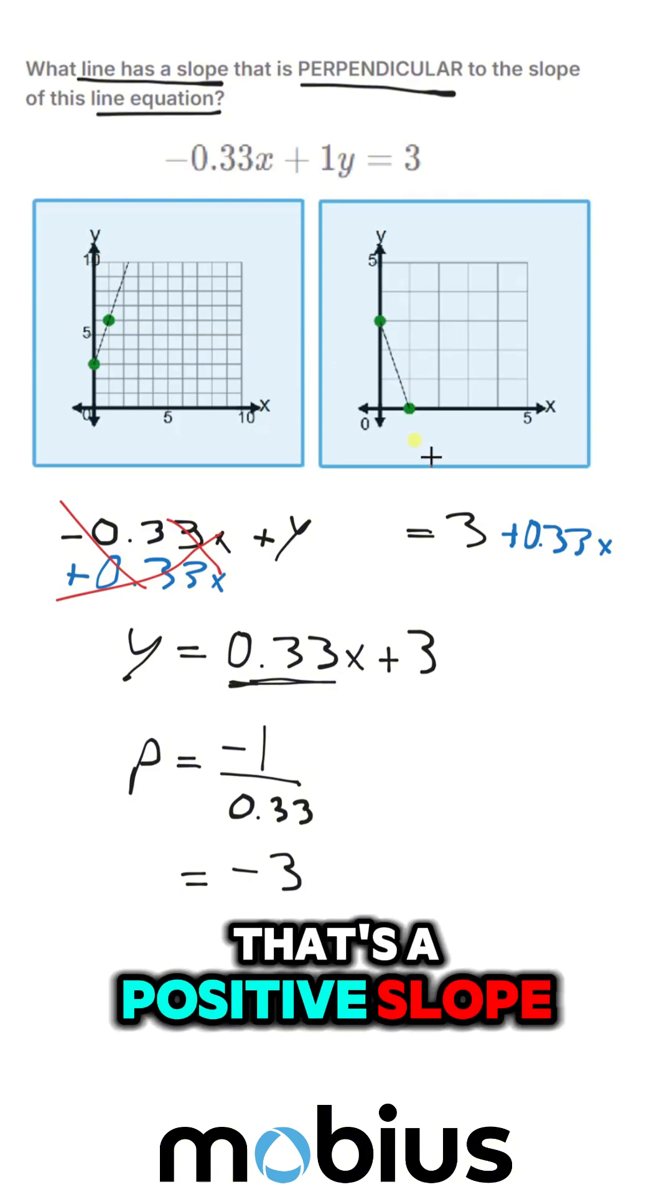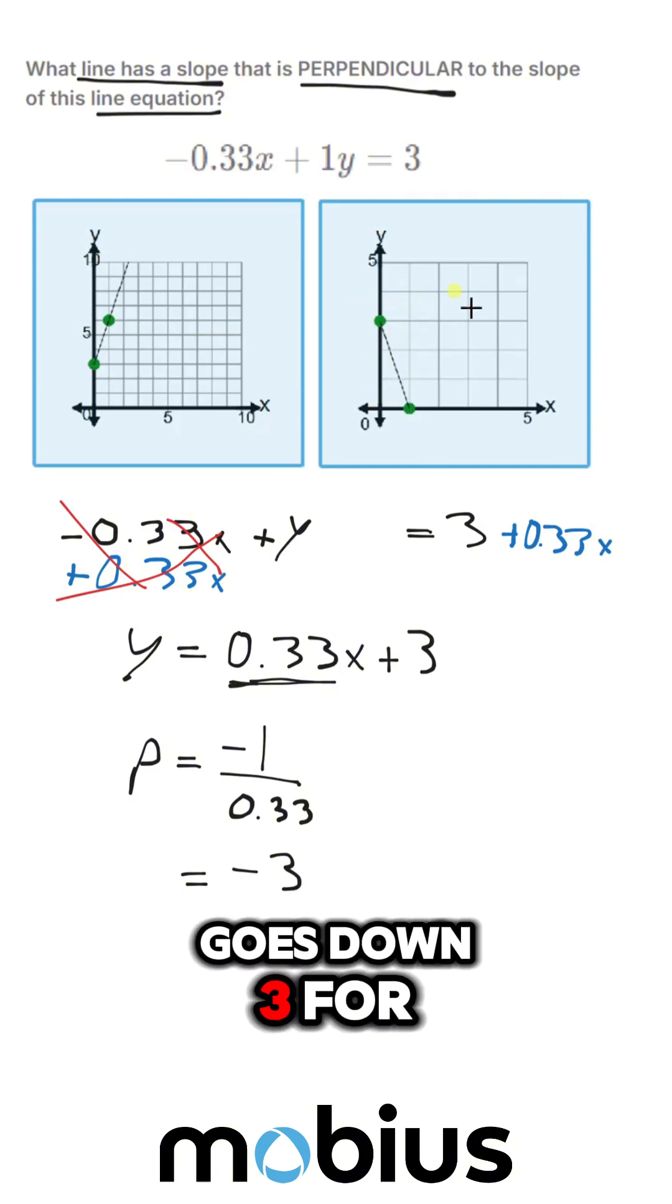That's a positive slope. That's a negative slope. So this is looking promising. Go down 3 for every 1. So this is our answer.